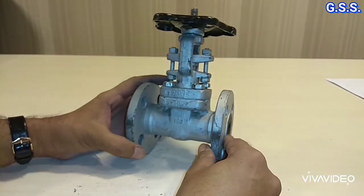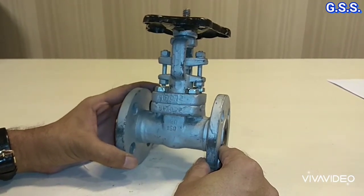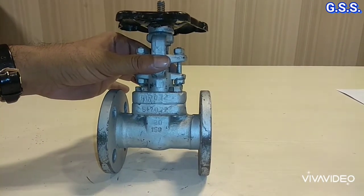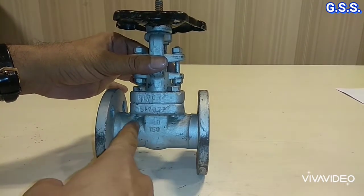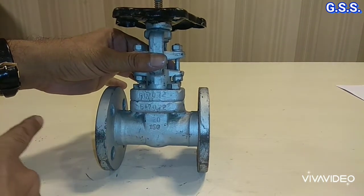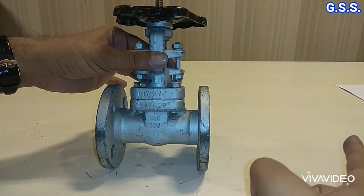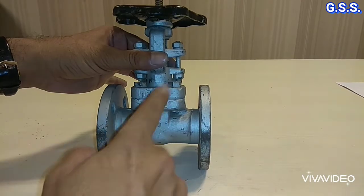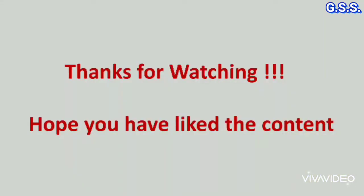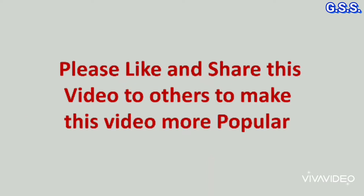So I have assembled the gate valve. This type of ordinary gate valve is bidirectional. That means flow can be from this side or from this side. It is bidirectional.